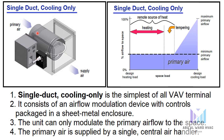The unit can only modulate the primary airflow to the space. The primary air is supplied by a single central air handler. This graph indicates how the air supplied to the space by the terminal unit varies as the space load changes. The vertical axis indicates the total airflow supplied to the space; the horizontal axis indicates the space load. The supply airflow to the space is reduced as the cooling load decreases. Responding to the space thermostat, the primary airflow is modulated between maximum and minimum settings. The maximum setting is determined by the design cooling load of the space, and the minimum setting is manually determined by the space ventilation requirement or minimum airflow for proper diffuser selection.